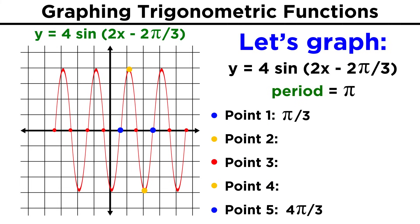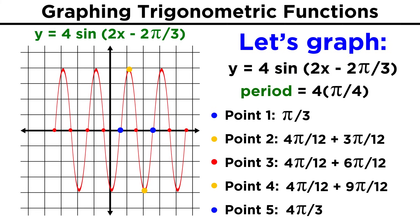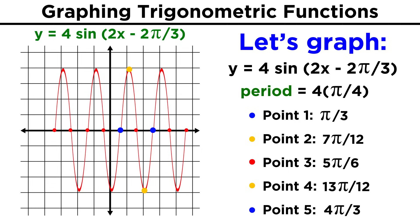We can find the x coordinates of these key points as well, we just have to split the period up into four parts. That gives us a quarter pi, and we just add quarter pi successively, starting with a third pi to get all the x coordinates. To do that we need a common denominator, which will be twelve, and then we combine and reduce, using the rules we already learned for adding fractions.